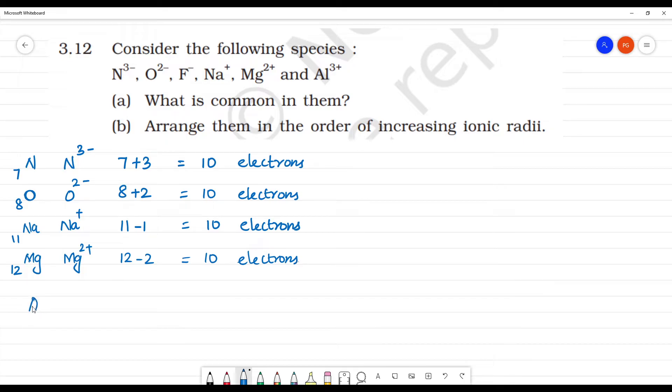Next, aluminium. Al³⁺ has atomic number 13. So Al³⁺ is 13 minus 3, which equals 10 electrons. What is common in them? All are having 10 electrons. That is the answer to question A.